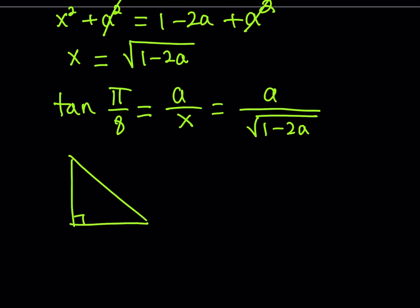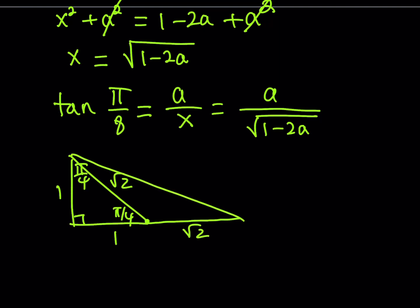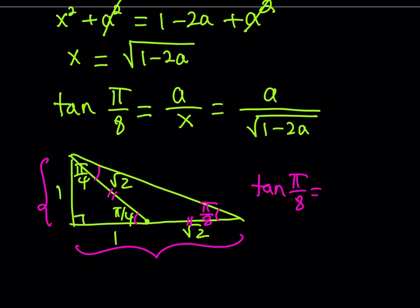Draw an isosceles right triangle with angles π/4, π/4, and sides 1, 1, √2. Now extend the base by √2 units. That gives an isosceles triangle. The base angles of an isosceles triangle are congruent, and since their sum from the exterior angle theorem is π/4, each base angle needs to be π/8. Therefore, tangent(π/8) = 1 / (√2 + 1). Rationalizing the denominator gives √2 − 1. So tangent(π/8) = √2 − 1.